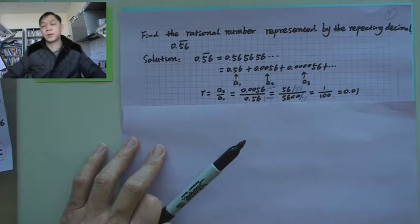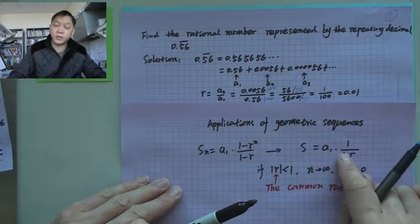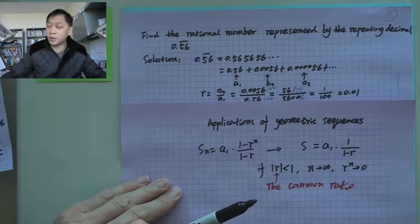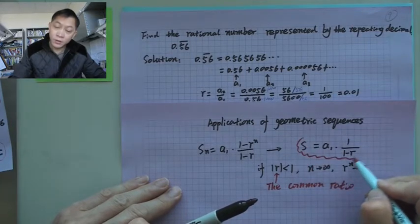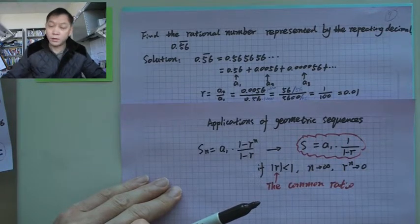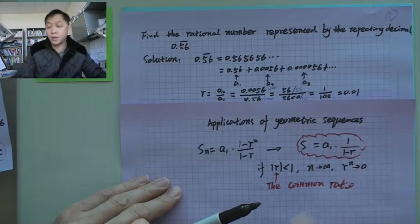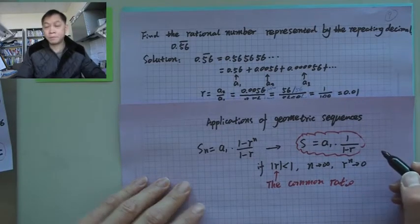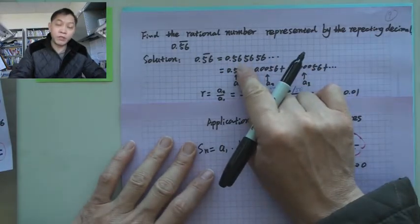Now, if you look at the formula for the infinite series, this formula looks even simpler. You see, it's like this: S equals a₁ times 1 over 1 minus r.